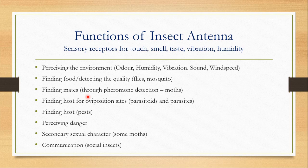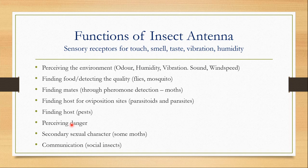Many parasitoids and parasite insects find their host for oviposition sites with the help of their antennae. Many pests find their host plants or host animals with the help of their antennae. Antennae also help in perceiving danger by perceiving vibrations mainly. Also sometimes odor molecules help insects to detect the presence of a predator. In some moths the antennae are so elaborate that they also play the role of secondary sexual character. In social insects, the antennae help in communicating between the members of a colony.